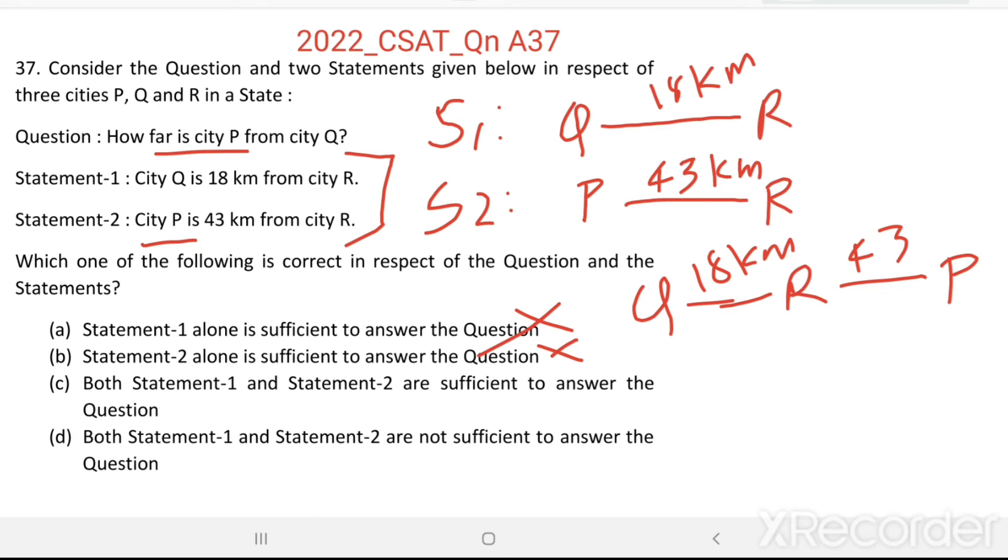Now, how far is city P from city Q? P to Q. If they are in straight line, then we just have to add 18 plus 43. But that is not said anywhere. So, we cannot say this is the distance between P and Q.